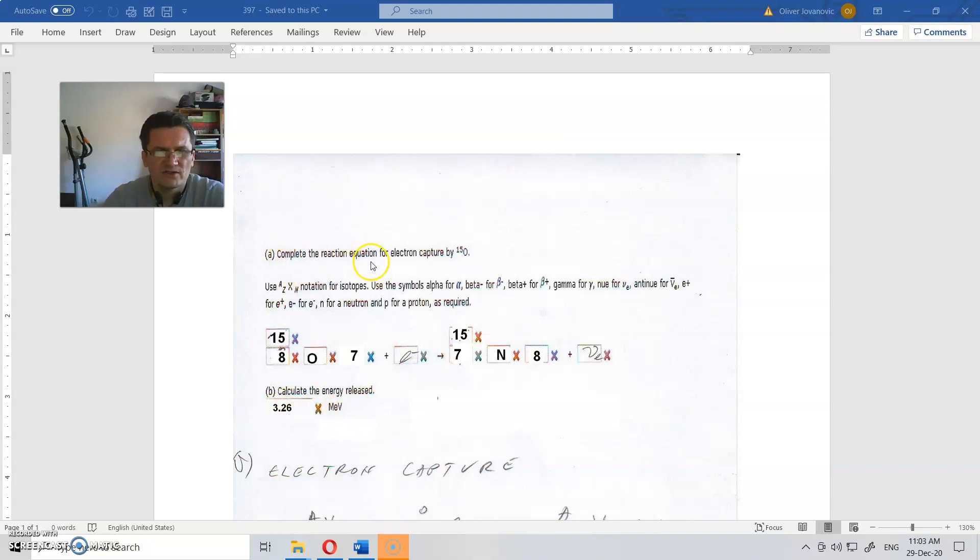So complete the reaction equation for the electron capture by oxygen-15. Number 15 here indicates 15 pieces of nucleus, in nucleus, that is together neutrons and protons. Use a ZXN notation for isotopes. Use the symbols alpha, beta minus, beta plus, gamma for what not as written here.